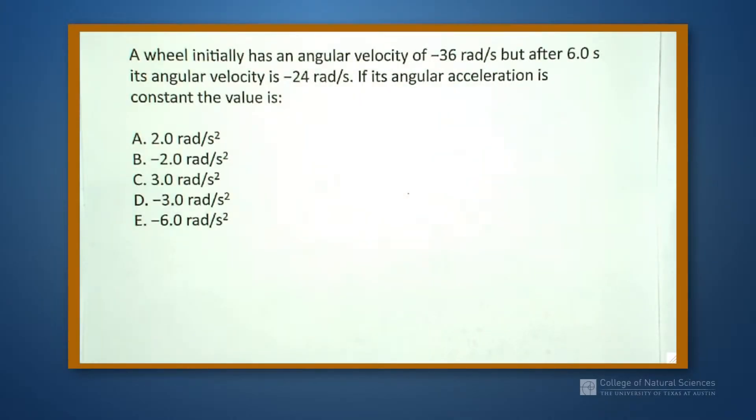So let's take a look at this question together. It says that we have a wheel initially has an angular velocity of minus 36 radians per second, but after 6 seconds, the angular velocity is minus 24 radians per second. If the angular acceleration in this is constant, then what is our value of it?